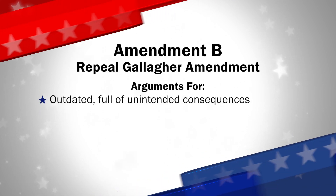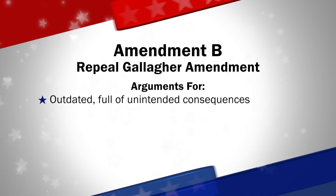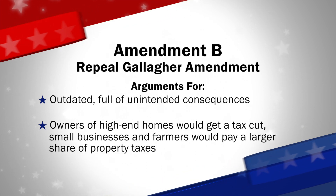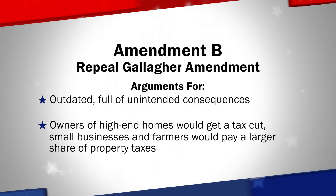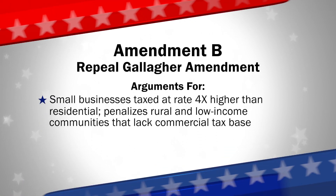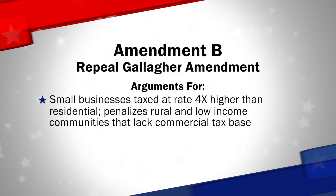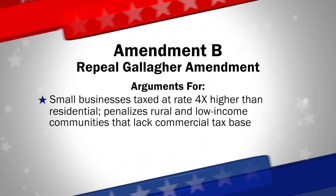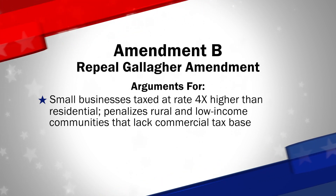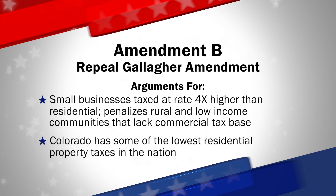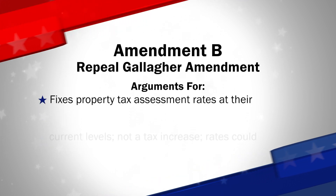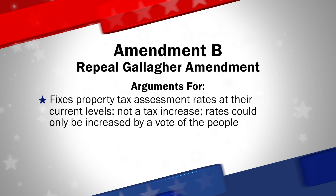Those in favor of Amendment B say the Gallagher Amendment is outdated and full of unintended consequences. If the Gallagher Amendment is not repealed, owners of high-end homes in Denver's wealthiest neighborhoods would get a tax cut next year, while small businesses and farmers would pay a larger share of property taxes. The Gallagher Amendment causes small businesses to be taxed at a rate four times higher than residential property owners and penalizes rural and low-income communities that lack a significant commercial tax base. Proponents also say Colorado has some of the lowest residential property taxes in the nation. Amendment B fixes property tax assessment rates at their current levels.